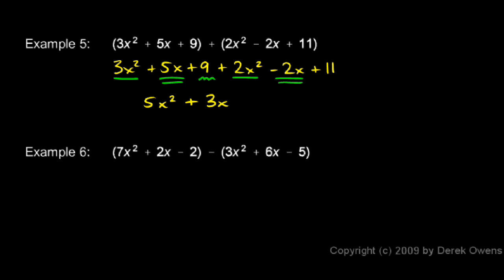Then here we have a 9 and an 11, and those combine to give us 20, a positive 20. And that's our answer: 5x² + 3x + 20.